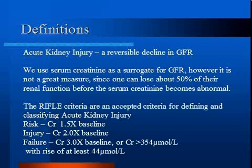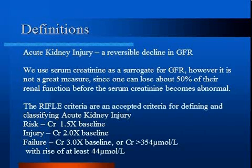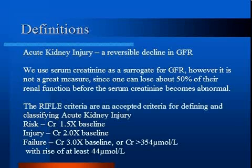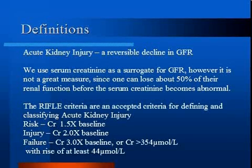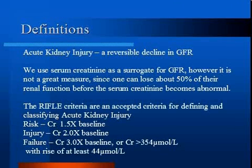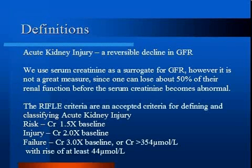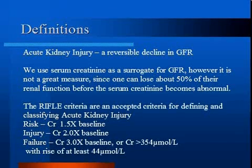The Acute Dialysis Quality Initiative defined criteria known as the RIFLE criteria for the definition and classification of acute kidney injury. The kidney is at risk when there is an increase in serum creatinine of 1.5 times the baseline or a decrease in GFR of 25%. It is injured when the increase is 2 times baseline or GFR decreases 50%. It is in failure when creatinine is 3 times baseline or GFR decreases 75%. Alternatively, an absolute serum creatinine of 354 with an acute rise of at least 44 is also considered acute kidney failure.